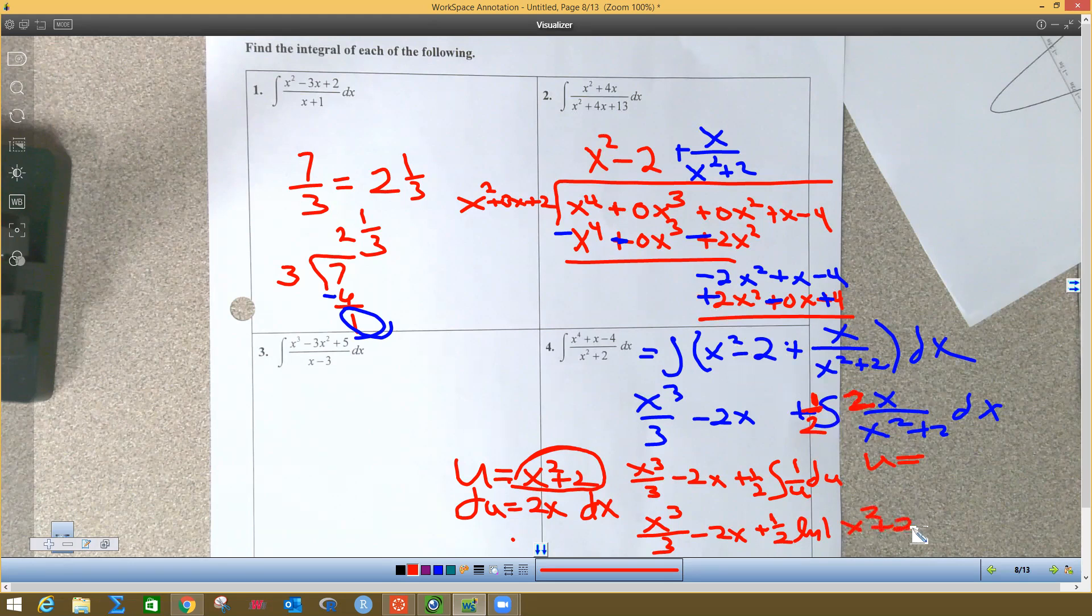Now in this particular case that should be plus C out there, not equal zero. Plus C, can you guys see that? A little bit. So your answer is x cubed over three minus two x plus a half natural log absolute value of x squared plus two. And then plus C out there by itself. Now on this case you would not have to have x squared plus two in absolute value.